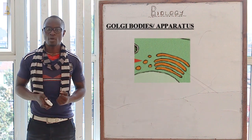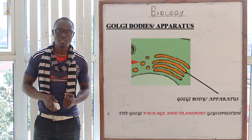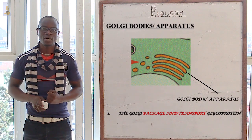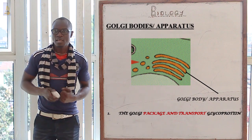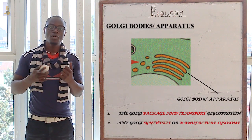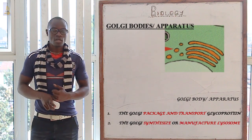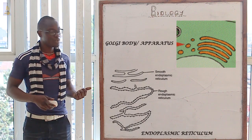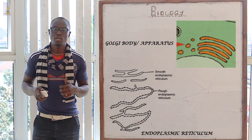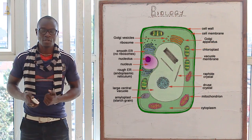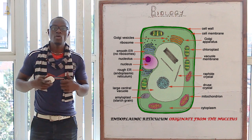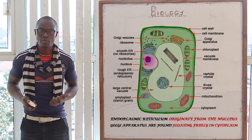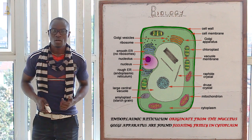The other organelle we have is the Golgi bodies, whereby the function of the Golgi bodies is that they package and transport glycoprotein within the cell. Another function of the Golgi body is that they produce the lysosome. The Golgi body looks exactly the same as the endoplasmic reticulum, but the difference is that the endoplasmic reticulum originates from the nucleus while the Golgi bodies are located anywhere in the cytoplasm of the cell.